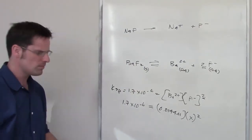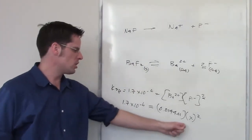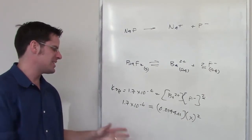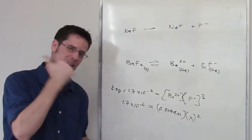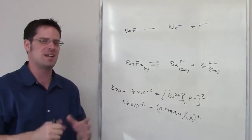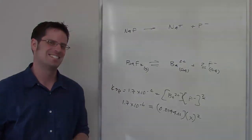So really, all you have to do is solve for X right here, and then say whatever X happens to be, once you hit that concentration and go above it, you'll start to get precipitation of barium fluoride. Let's go ahead.